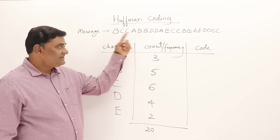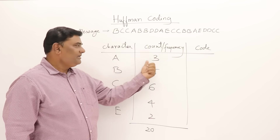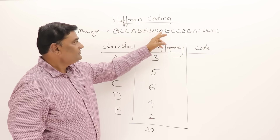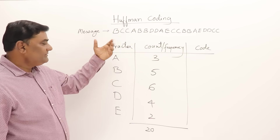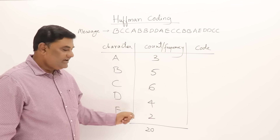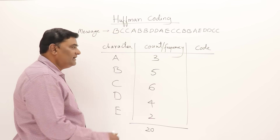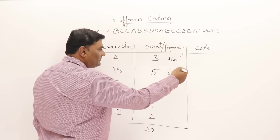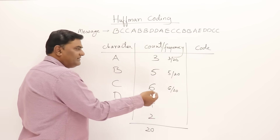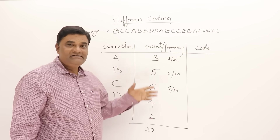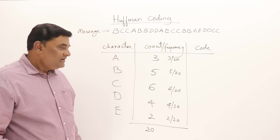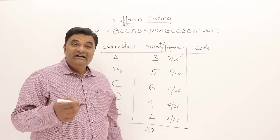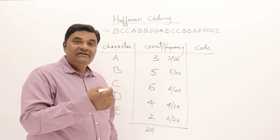Here I have taken the alphabets in this message and written how many times each one appears — the count, or frequency. A appears three times, and you can check all of them. There are 20 alphabets total. For five characters, I don't need 8 bits — 8-bit ASCII codes are for 128 characters or symbols. For only 5, we can use far fewer bits.